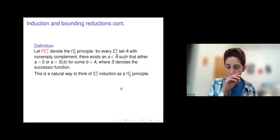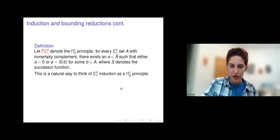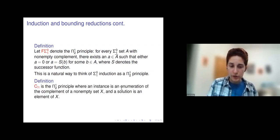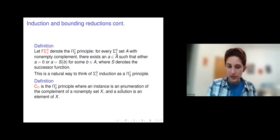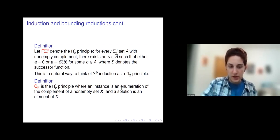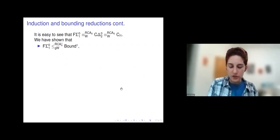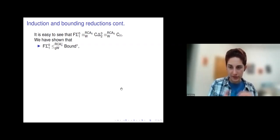As with FΣ⁰₁, we can also think about FΠ⁰ₙ for any n. We also consider the principle CN, where an instance is an enumeration of the complement of a non-empty set X, and the solution is an element of X — given an enumeration of a set with non-empty complement, give me an element of the complement. In terms of Weihrauch reducibility over RCA₀, FΣ⁰₁ and CN are equivalent, and they're also equivalent to a principle CΔ⁰₂, which is CN extended to Δ⁰₂ sets.